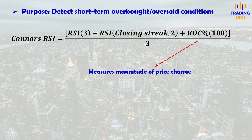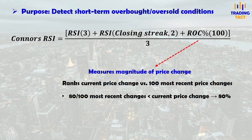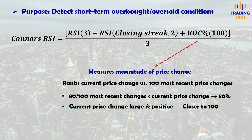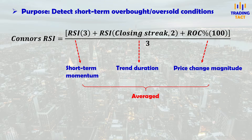The third component measures the magnitude of the price change. It ranks the current price change against all other price changes within the last 100 periods. For example, if 80 of the last 100 price changes are lower than the current price change, you get 80%. If the current price change is large and positive, this value will be close to 100. Finally, you obtain the Connors RSI by averaging these three components.